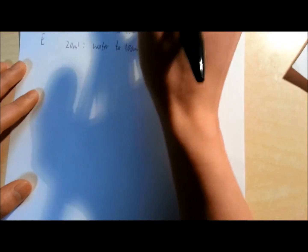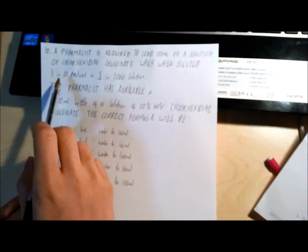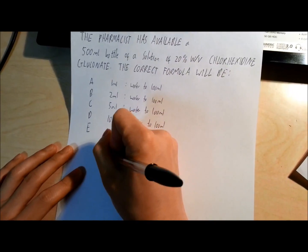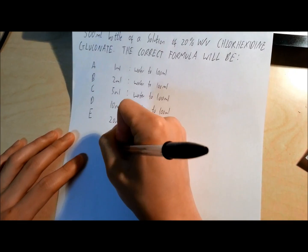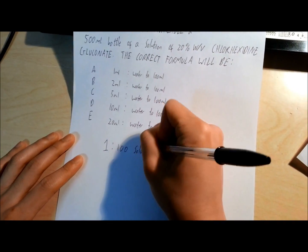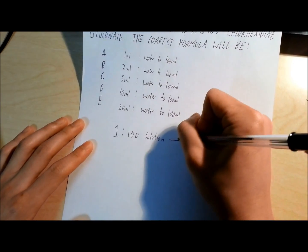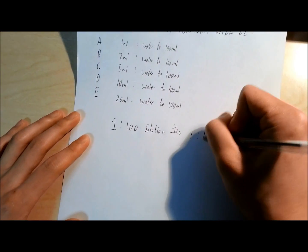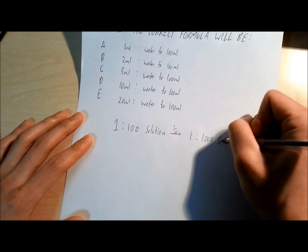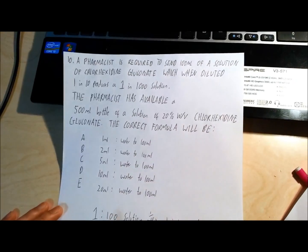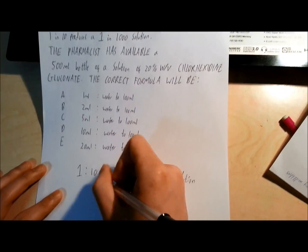So how we do this is that the question says when diluted 1 in 10, it produces a 1 in 1,000 solution. So effectively, you would want a 1 in 100 solution. Because when you dilute this 1 in 10, it becomes a 1 in 1,000 solution. Not only this, but you need 100 milliliters of this 1 in 100 solution.